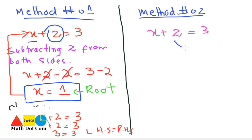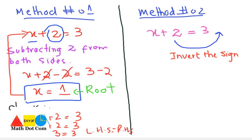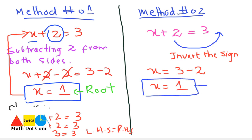In Method 2, we will just move the 2 to the other side. Whenever we move anything from one side of the equality to the other, we invert the sign. Since it is adding, the sign will be inverted, so: x equals 3 minus 2, and x equals 1. Here again, the answer is the same.